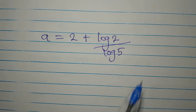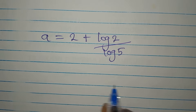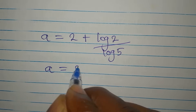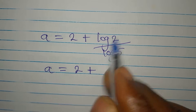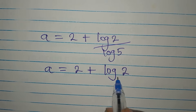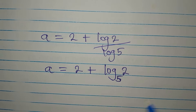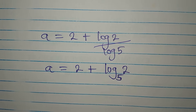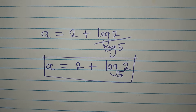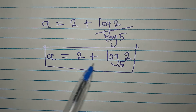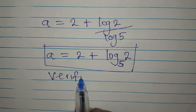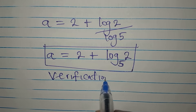Now I'll apply the change of base rule to log 2 divided by log 5. This becomes log 2 to base 5. So the value of a is 2 plus log 2 to base 5. But we need to verify this to be sure.